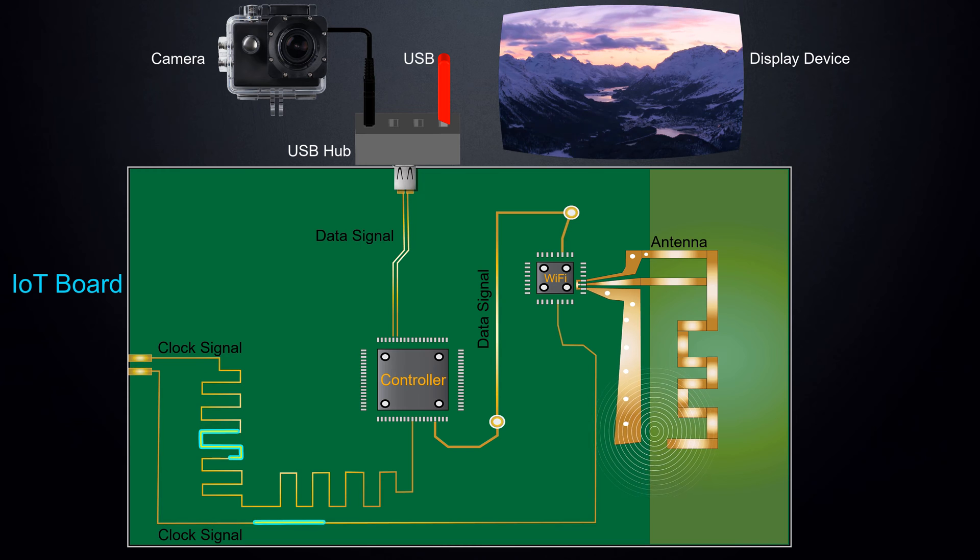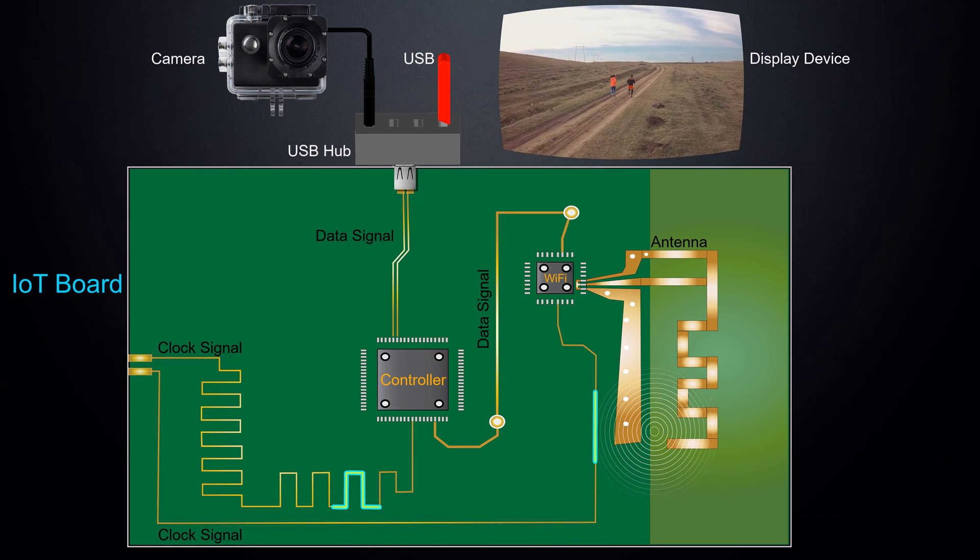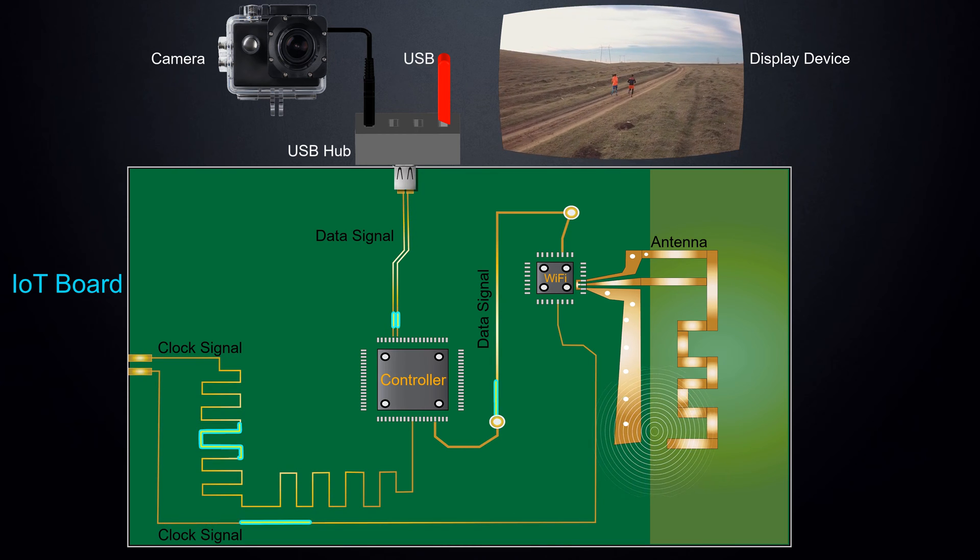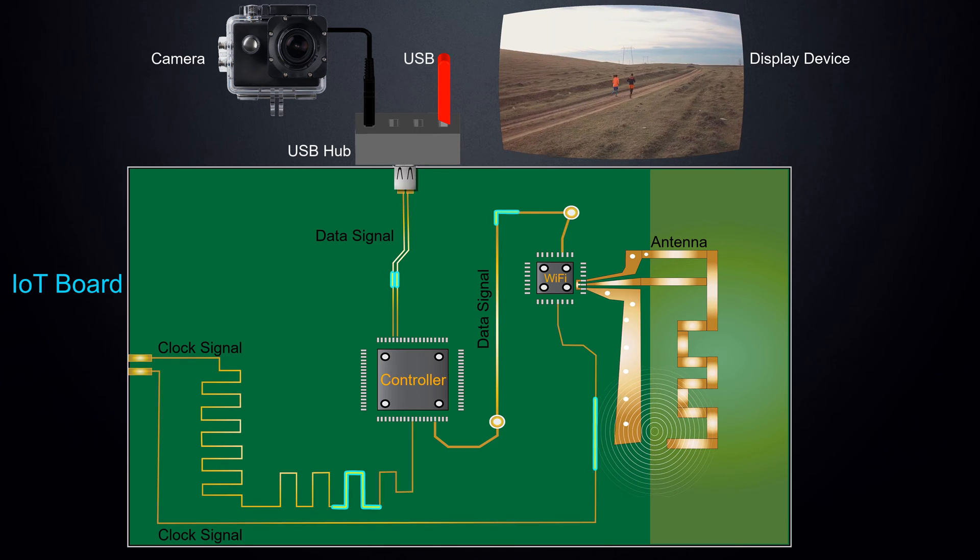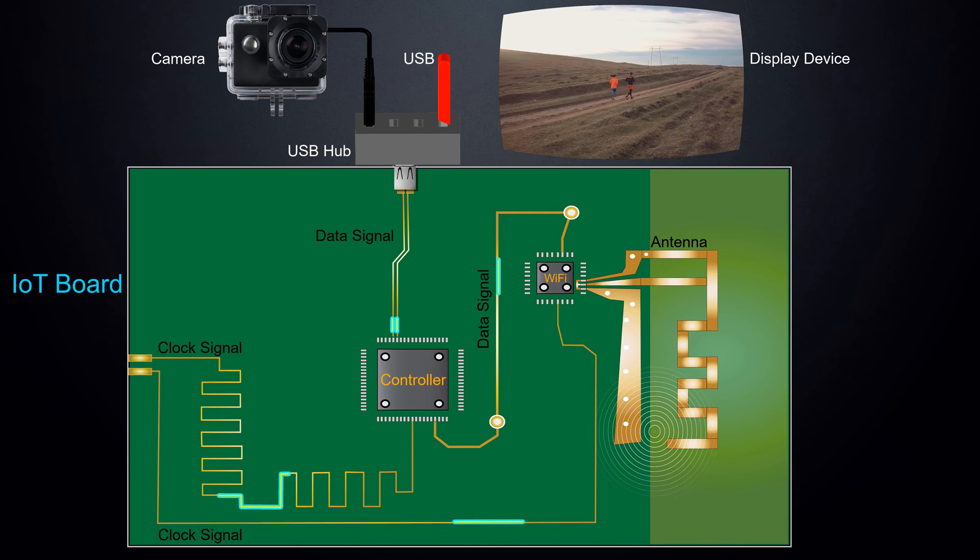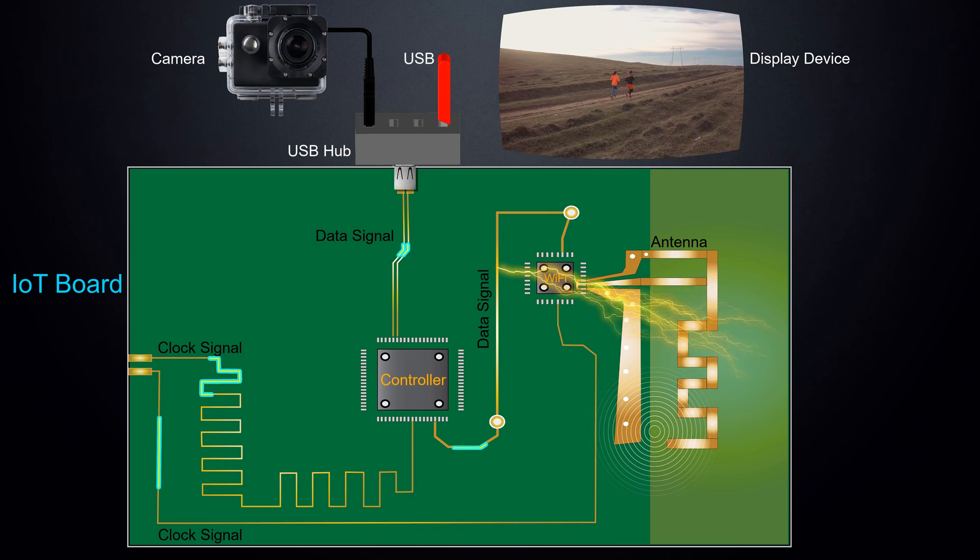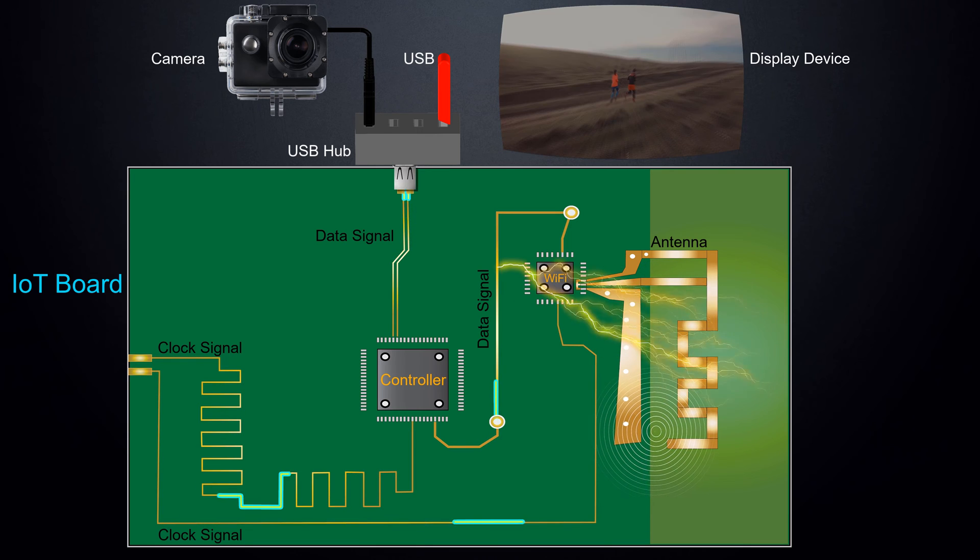Without interference, the system performs according to specification and the target data rate is achieved, maintaining a high-quality video stream. However, as the digital clock and the data signals are transmitted, unintended energy may appear at the antenna port, degrading the receiver's sensitivity.